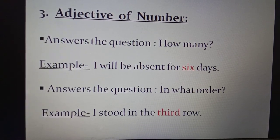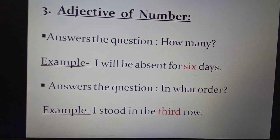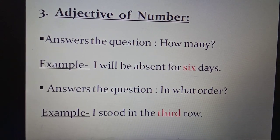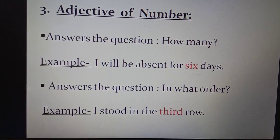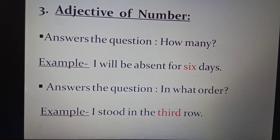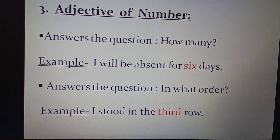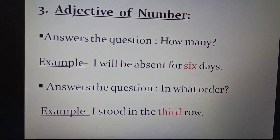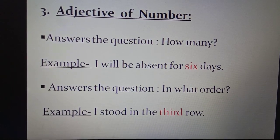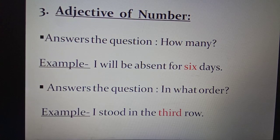Adjective of number also answers the question: in what order? Order reminds us of ordinal numbers, so adjective of number is also used with ordinal numbers. For example — 'I stood in the third row.' Third is an ordinal number, row is a countable noun, and third is the adjective of number.